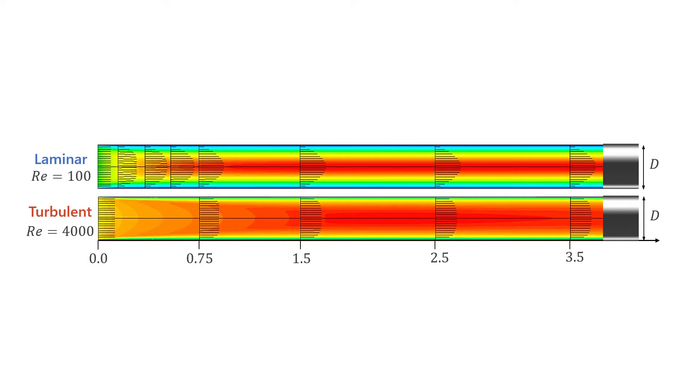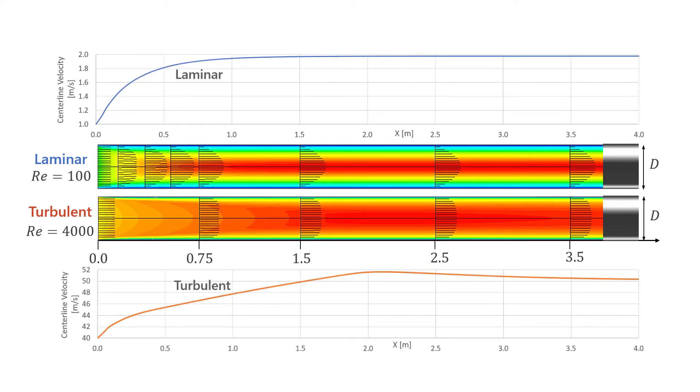Let's plot now the centerline velocity along the ducts. The laminar and the turbulent entrance length are roughly reported here. The laminar case reaches fully developed conditions much earlier than the turbulent case due to the low Reynolds number.